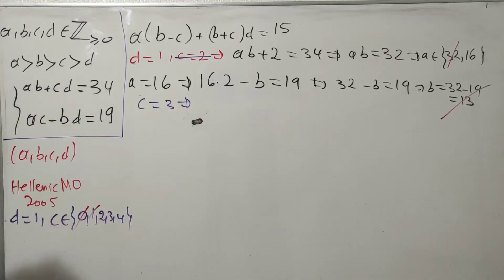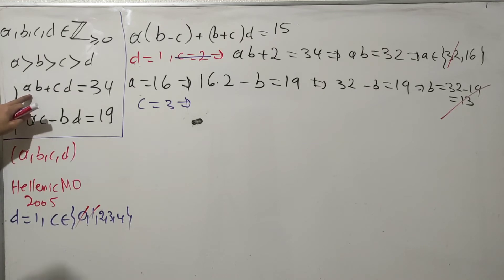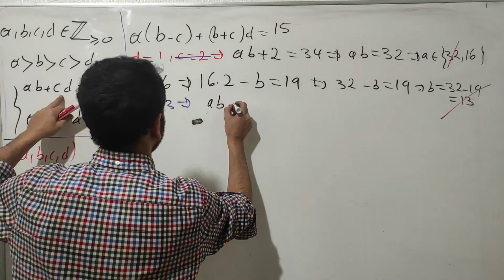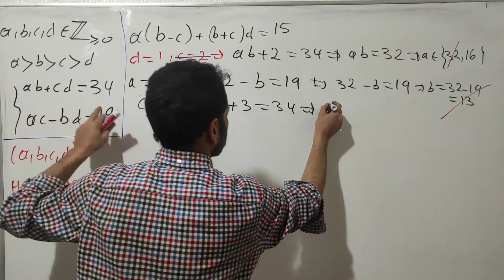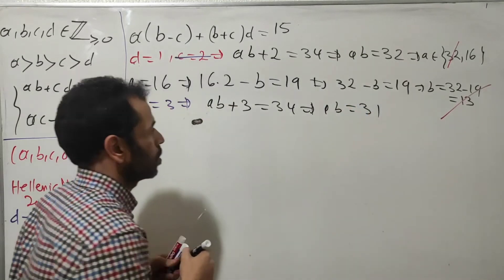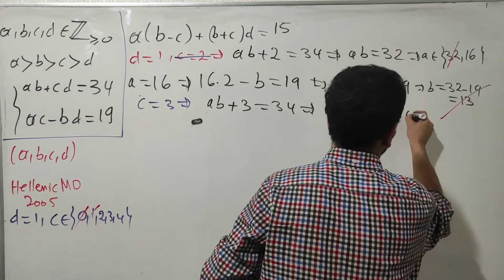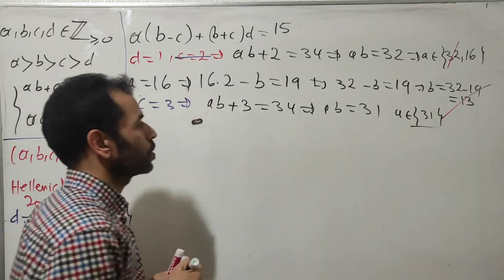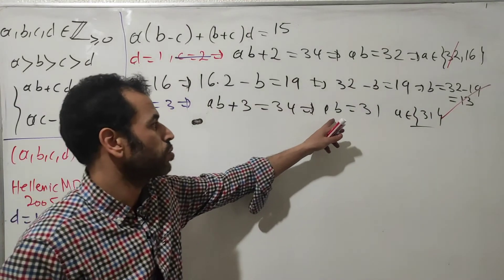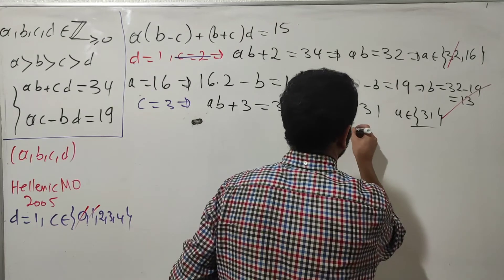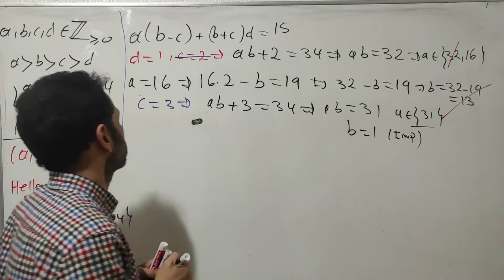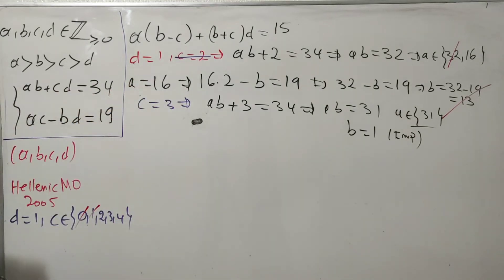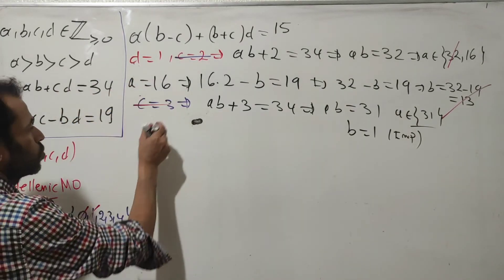If c = 3: substituting gives ab + 3 = 34, so ab = 31. Since 31 is prime, a = 31 and b = 1. But b = 1 = d, which is impossible. So c = 3 doesn't work.